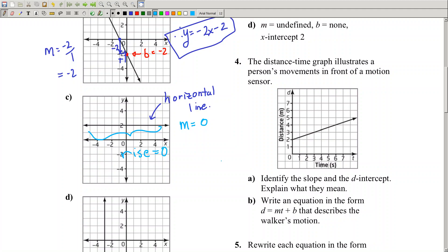The rise over run will be zero over some number. How many boxes can I take off? Four, eight, nine, ten? Zero divided by any number is zero. I've got a slope of zero.